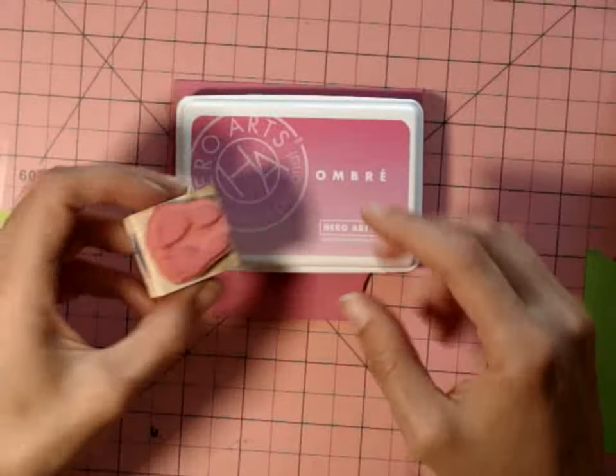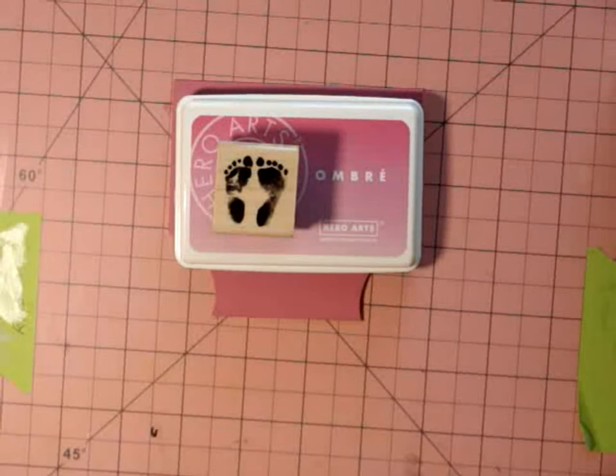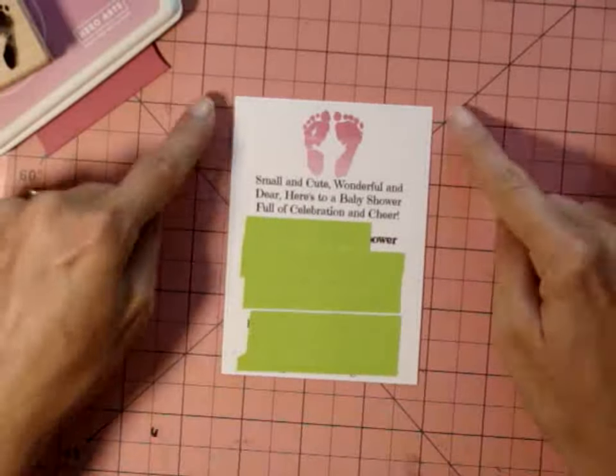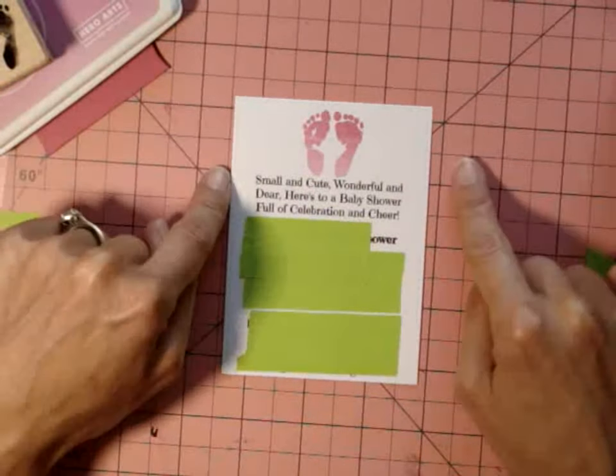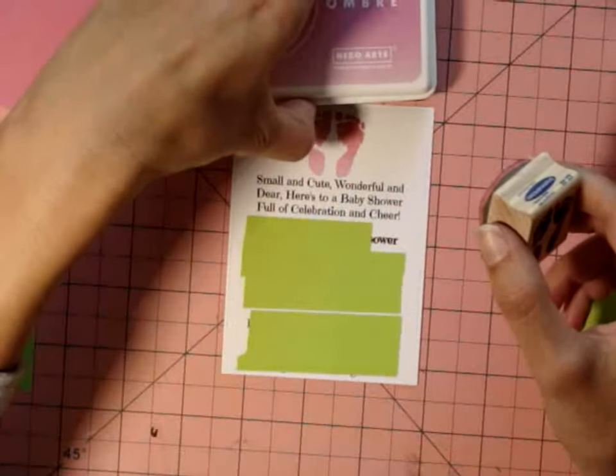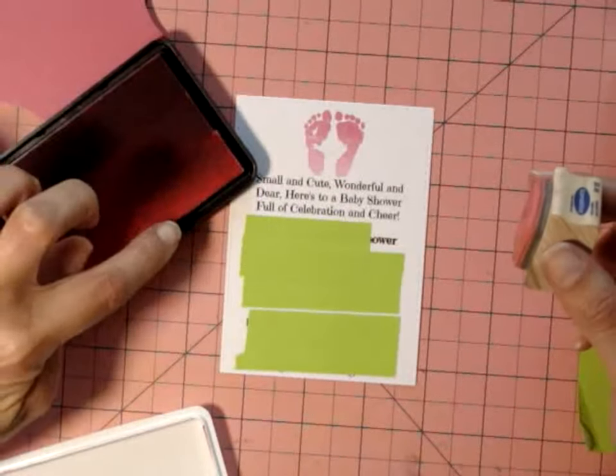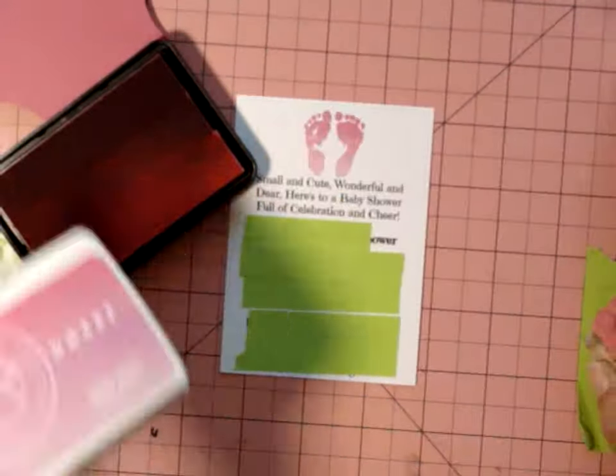And this is the ombre ink pad by Hero Arts. That is so cute. I'm going to use that on the insert of the card. I have masked off the address. I'm just showing you the process; I'm not actually going to do it.